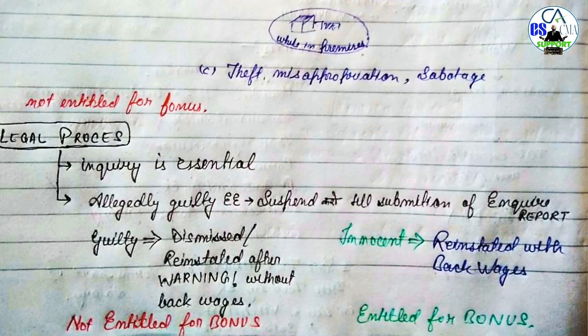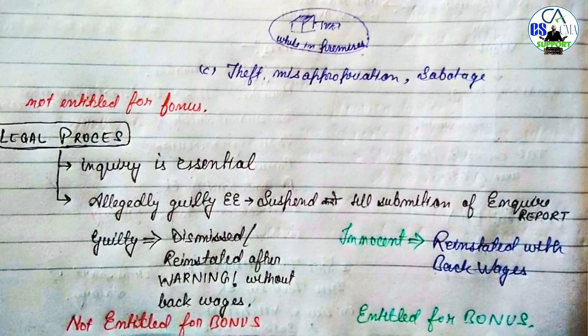लेकिन अगर उस पे इल्जाम लगने के बाद inquiry चला और inquiry report से पता चला कि वो innocent है - तो उसे बाद में आप reinstate कर लें service में, with back wages। आपको reinstate तो करेंगे ही, लेकिन आपको back wages भी देना पड़ेगा उस period का - जिस period के दौरान आप उसको suspend करके रखे थे क्योंकि inquiry चल रही थी। और वो employee entitled for bonus भी है।